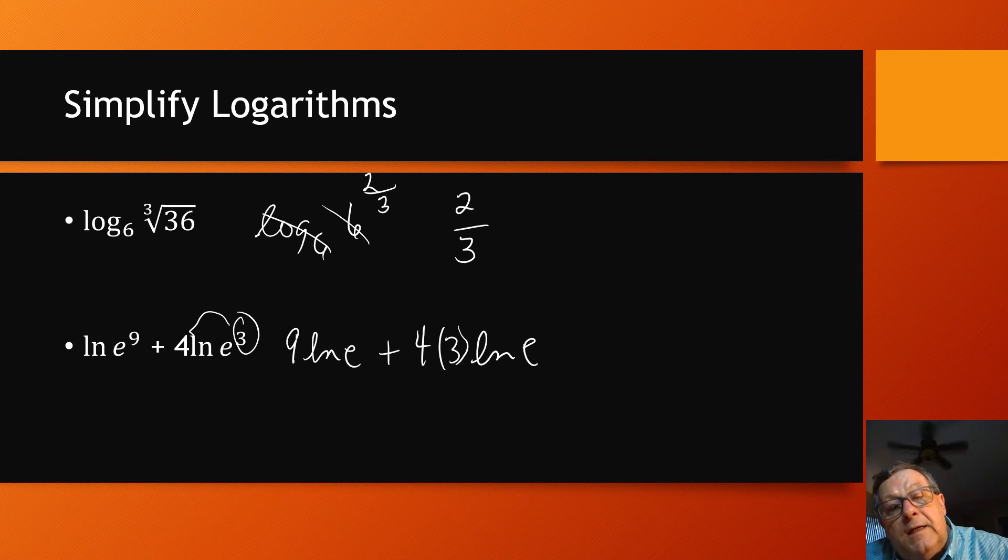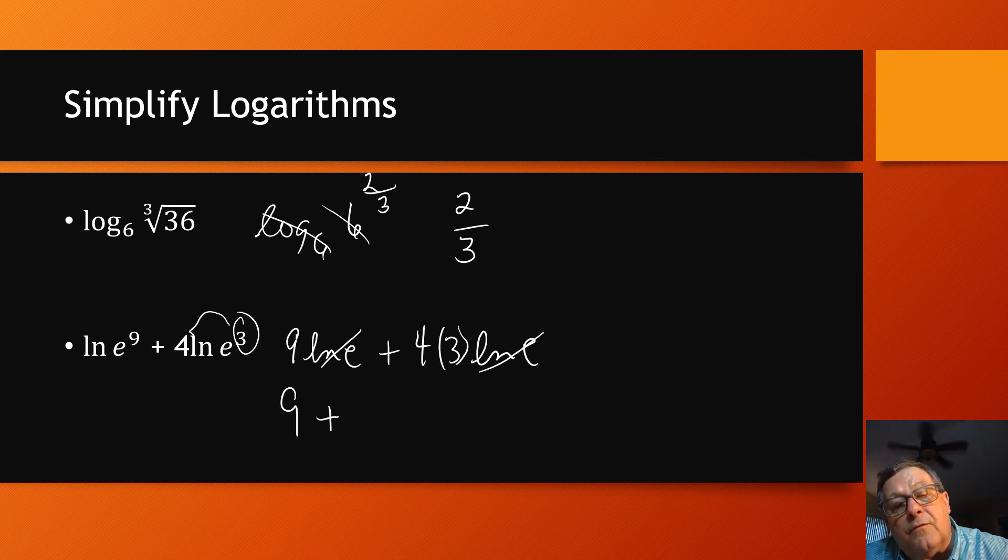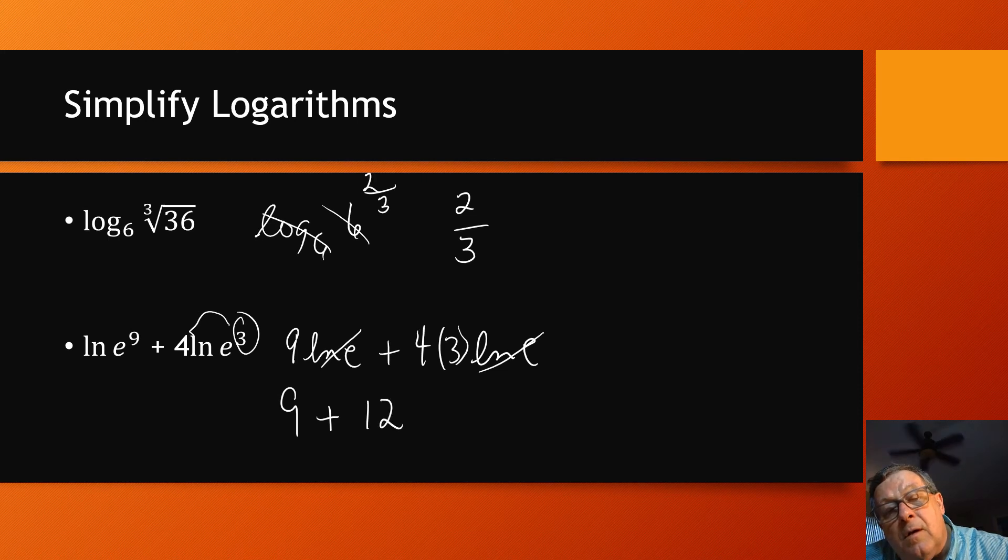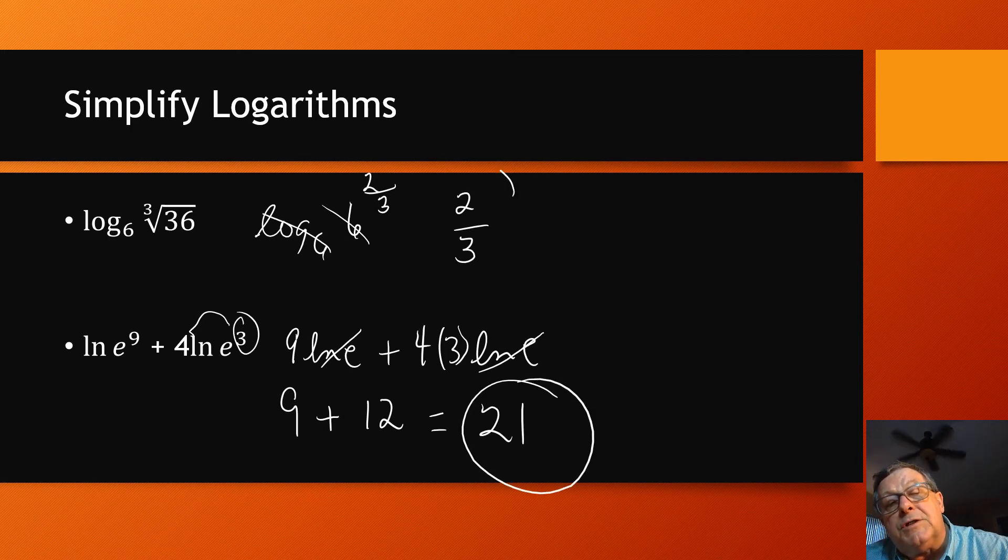Now here my LNs and the E's are going to cancel. So then I'm left with 9 plus 4 times 3. What's 4 times 3? 12. And what's 9 plus 12? 21. Shazam.